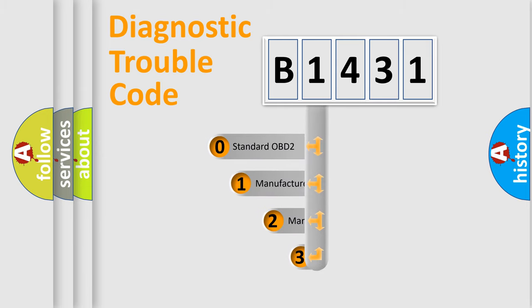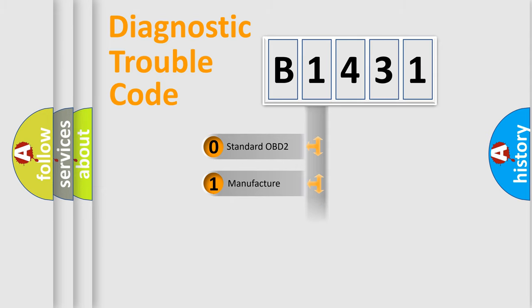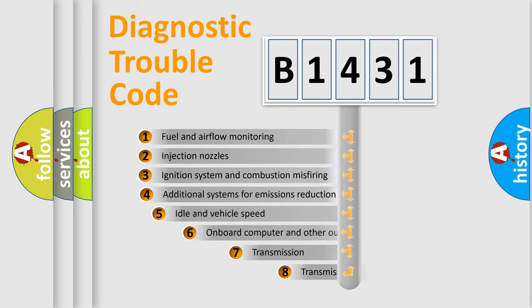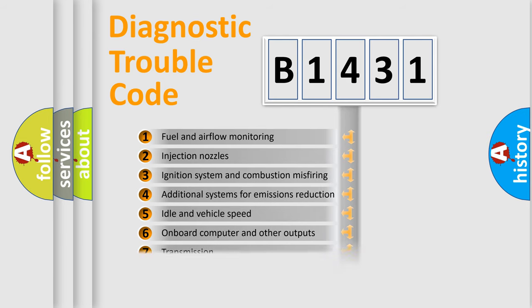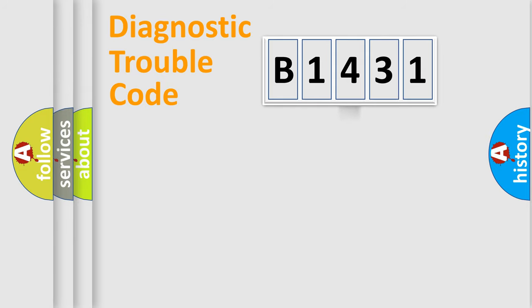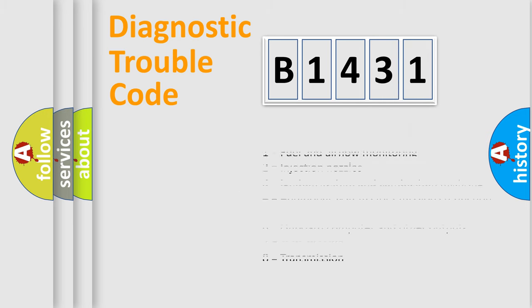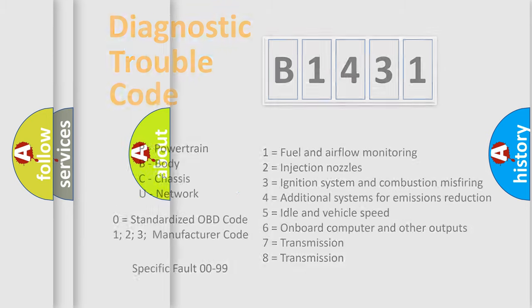This distribution is defined in the first character of the code. If the second character is expressed as zero, it is a standardized error. In the case of numbers 1, 2, or 3, it is a more specific expression of a car-specific error. The third character specifies a subset of errors. The distribution shown is valid only for the standardized DTC code, and only if the second character code is expressed by the number zero. The last two characters define the specific fault of the group.